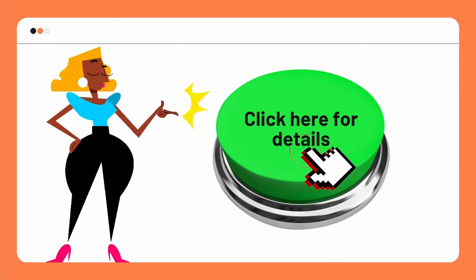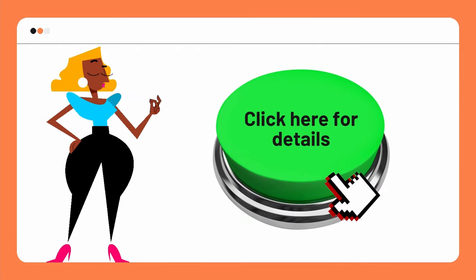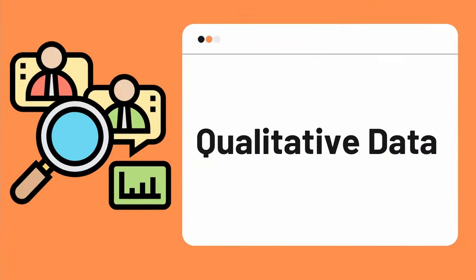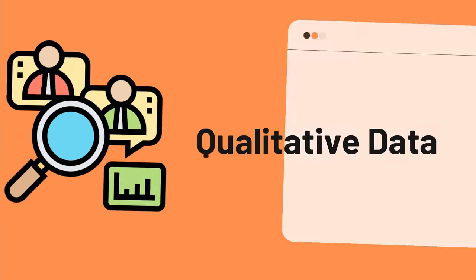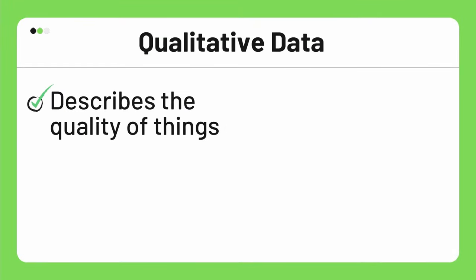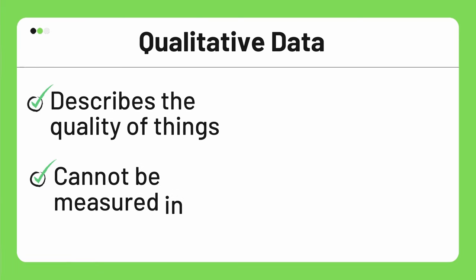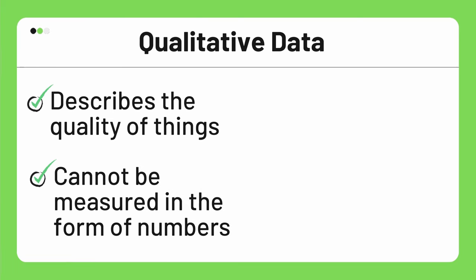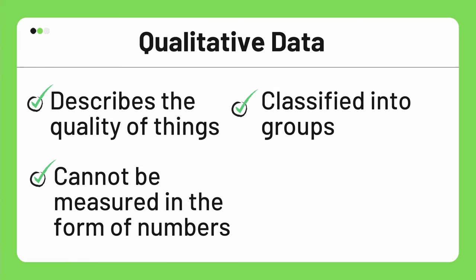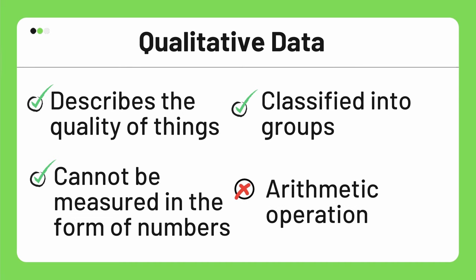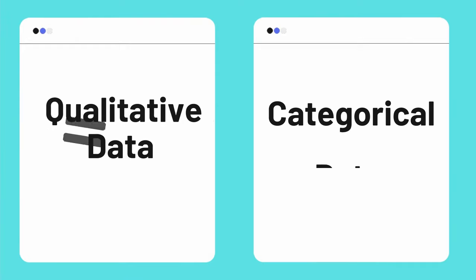Moving on to qualitative data and its types — as already mentioned, qualitative data talks about the quality of things and cannot be measured in the form of numbers. Hence, this type of data is classified into groups, and no arithmetic operation is possible on it.